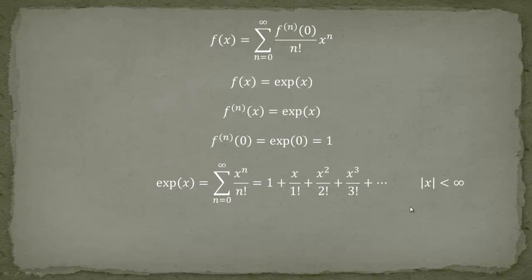Very important is that the radius of convergence — which can be shown using the quotient rule or the Cauchy-Hadamard theorem — is infinitely large. As long as your x is finite, you can take more and more terms in the series and get a convergent sum. The magnitude of x can be arbitrarily large but must be fixed and smaller than infinity.